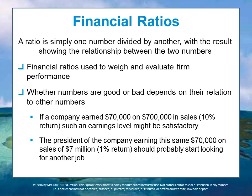A ratio is simply one number divided by another number. The result shows the relationship between those two numbers. For example, fuel efficiency — dividing the number of miles per gallon — shows you that you get 55 miles per gallon in a particular car, like a Toyota Prius, which is better than the average car. Financial ratios used to weight and evaluate a firm's performance are very similar to this.